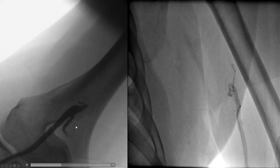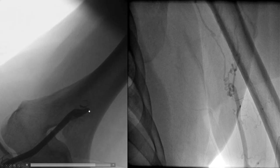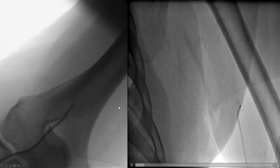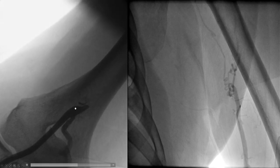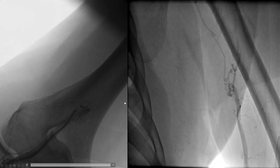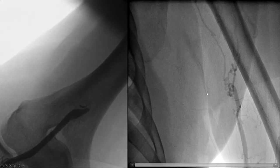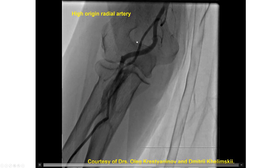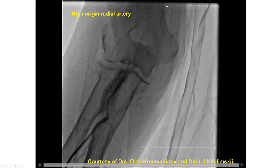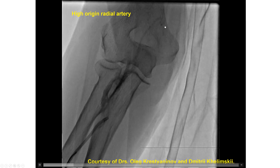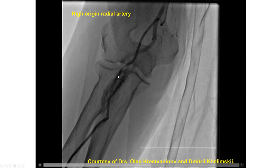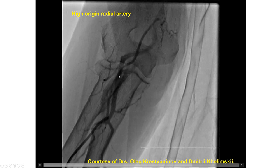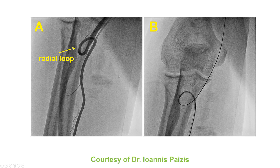Here is a patient who had bilateral brachial artery occlusion — in patients like this, femoral axis needs to be used. This is an example of a high-origin radial artery that was also small and diffusely diseased, creating resistance to catheter advancement.